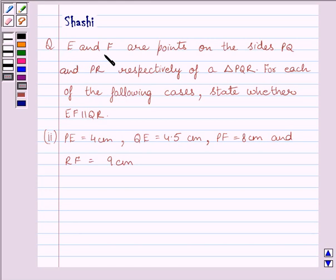E and F are points on the sides PQ and PR respectively of a triangle PQR. For each of the following cases, state whether EF is parallel to QR. For the second part, PE is equal to 4 cm, QE is equal to 4.5 cm, PF is equal to 8 cm and RF is equal to 9 cm.